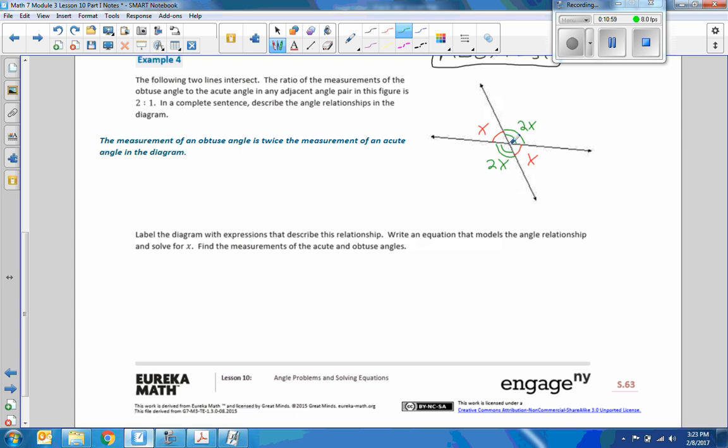So now we've got this set up here. It says label the diagram with expressions that describe the relationship. Write an equation that models the angle relationship and solve for x. Find the measures of the acute and obtuse angles. So this is angles at a point, so a full circle is 360 degrees. So just starting here and going around clockwise so we don't miss anything, I'm going to say 2x plus x plus 2x plus x equals 360. Combine like terms. 2x plus x is 3x, plus 2x is 5x, plus 1x is 6x. 6x equals 360 degrees. We have multiplication here. We're solving an equation, so we do PEMDAS backwards, and we do the inverse. So multiplication's inverse is division. So if I divide the left by 6, I have to divide the right by 6. 6 divided by 6 is 1. 1 times x is simply x. And 360 divided by 6 is 60. So x is 60 degrees.